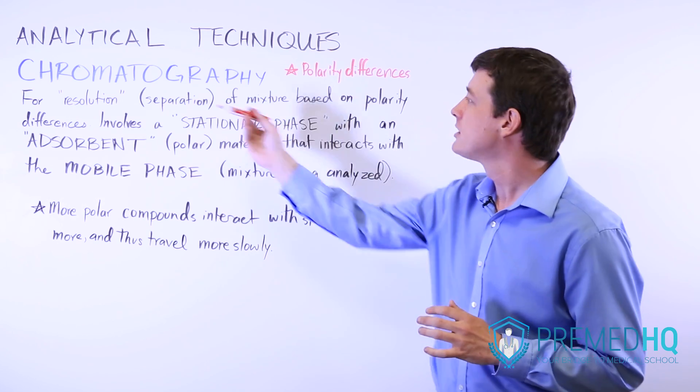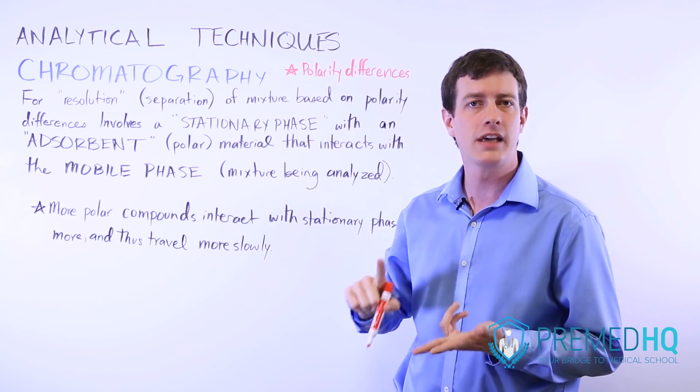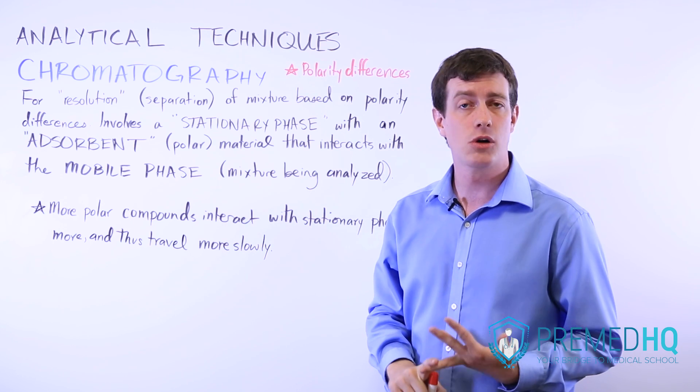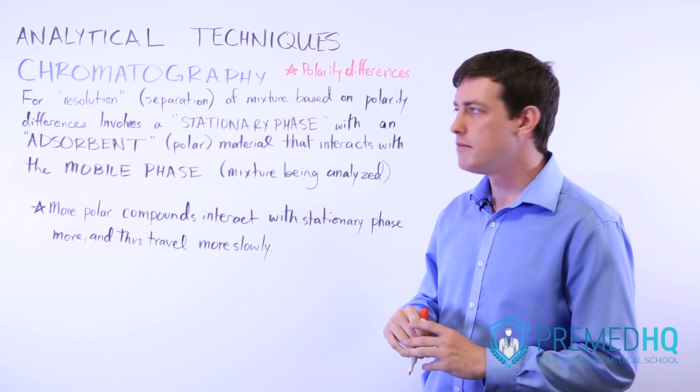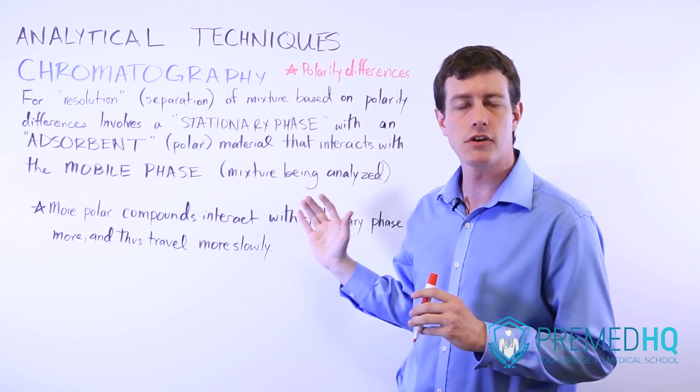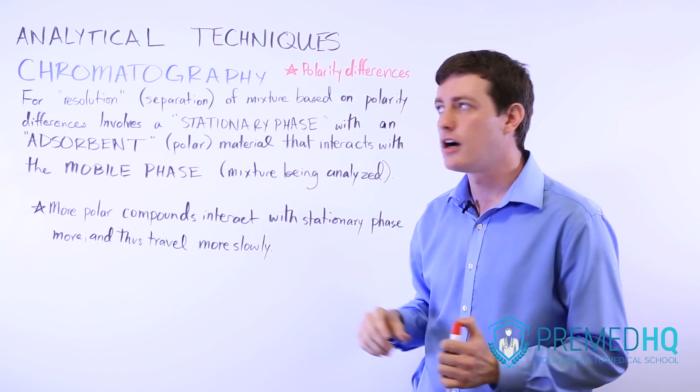Chromatography comes in many different flavors: column chromatography, gas liquid chromatography, thin layer chromatography, and paper chromatography. But all of these are unified by some central themes of chromatography, which we'll go over first before we discuss the subtypes.